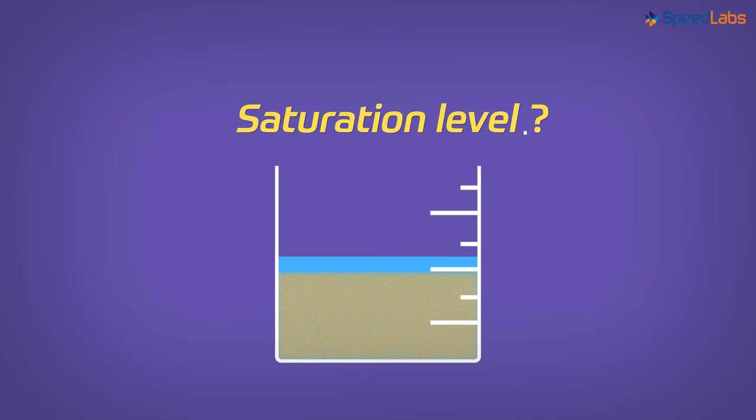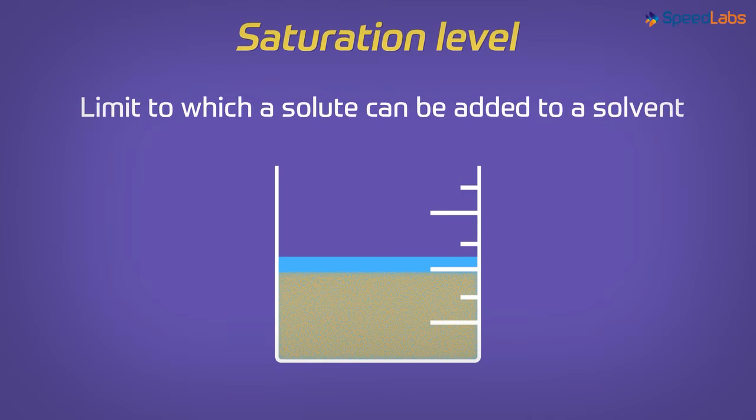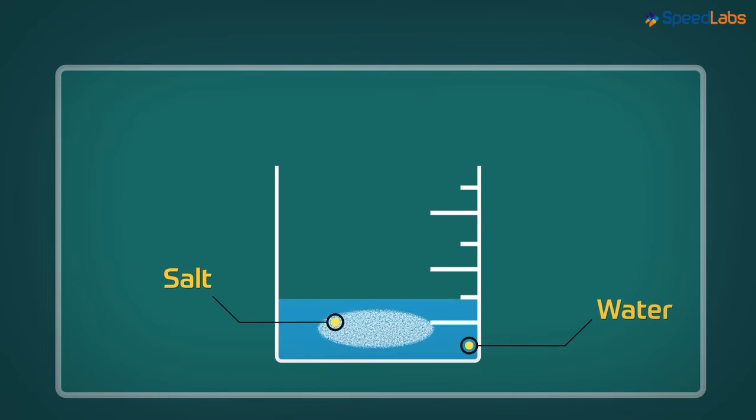That brings us to the concept of saturation level. What is saturation level? It is basically the limit to which a solute can be added to a solvent. To understand this, we take a simple example of water and salt dissolved in it. We know that if we keep adding salt to water, then after a point of time, the salt will not get dissolved.